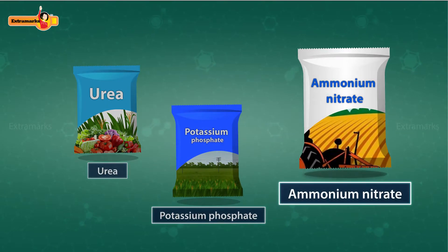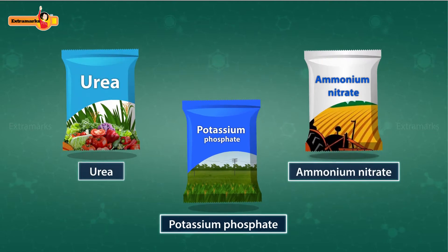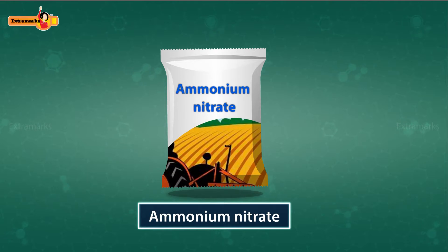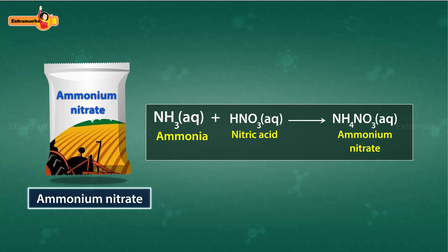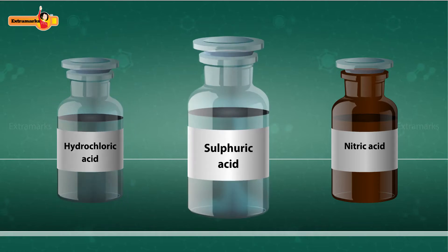One of the methods of doing so is by adding fertilizers such as urea, ammonium nitrate, potassium phosphate, etc. to the soil. Ammonium nitrate is an important fertilizer which is used to replenish nitrogen in the soil. It is prepared by the reaction of ammonia with nitric acid.